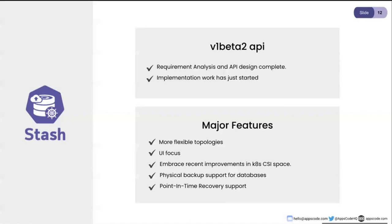Another area is the storage layer revision that has happened in Kubernetes. They've introduced things like ephemeral containers. Today, if you need to access the disk, you have to inject a sidecar and run it at all times. With ephemeral containers, you don't have to run those sidecars at all times. If you're taking a backup only four times a day, you can inject a sidecar into the pod just for those four times and save on the CPU and memory used for these operations.